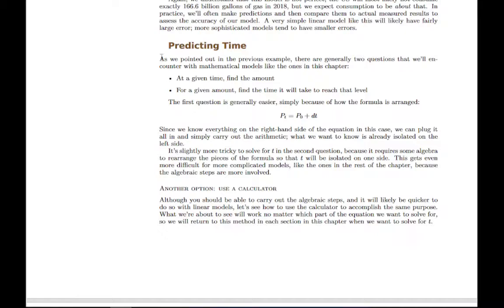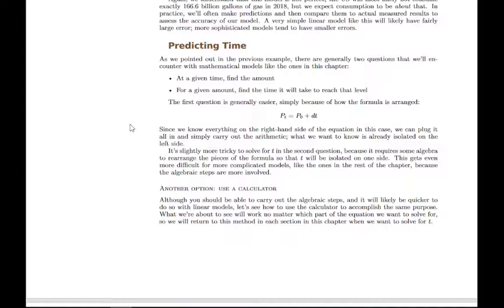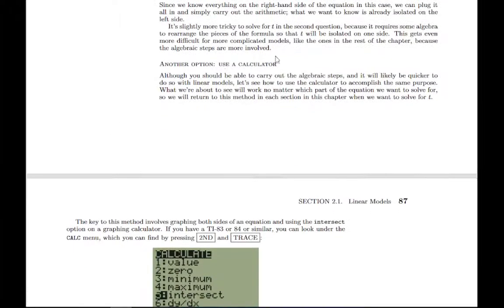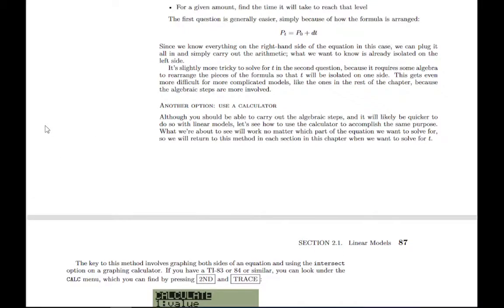When it comes to predicting the time that it reaches a certain value, you have to do a little bit of algebra here. Predicting the population at a certain point in time is usually pretty straightforward. You just plug in t, do a little arithmetic, and you're done. But to solve for t, you have to do a little algebra. There's another way to do it, and I'm going to show you here how to use a calculator. Ideally, you should get your own calculator out and follow the same process.